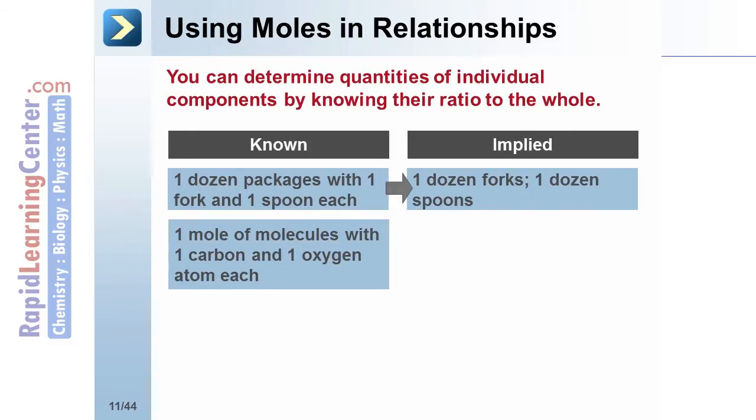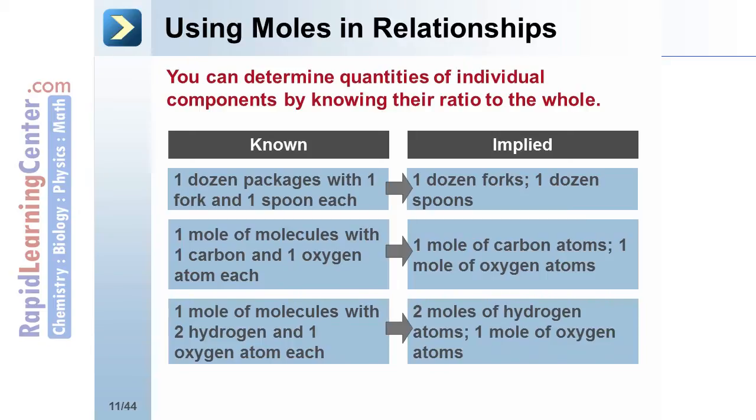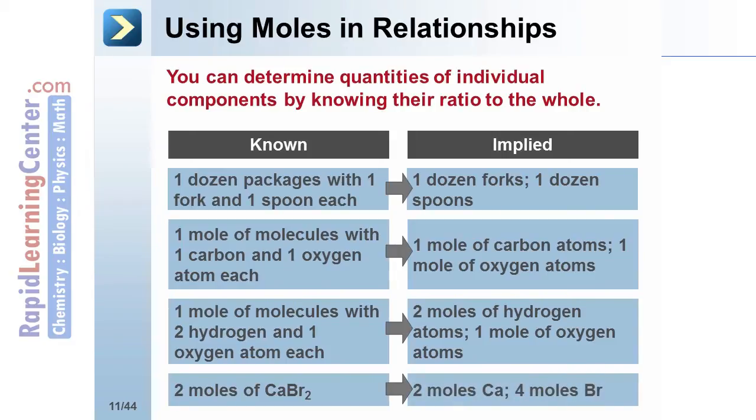If you have one mole of molecules, and each molecule has one carbon and one oxygen atom, then you know you have one mole of carbon atoms and one mole of oxygen atoms. One mole of molecules with two hydrogen atoms and one oxygen atom each leaves you with two moles of hydrogen atoms and one mole of oxygen atoms. This works in chemical formula notation as well. Two moles of CaBr2 leaves you with two moles of Ca and four moles of Br.